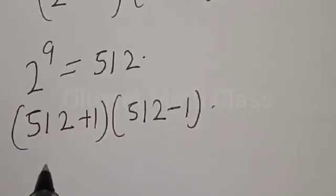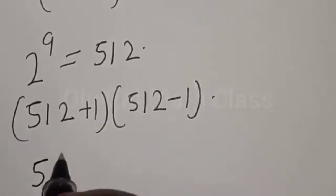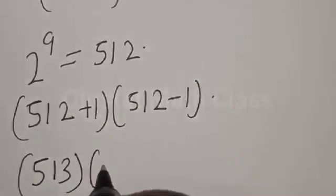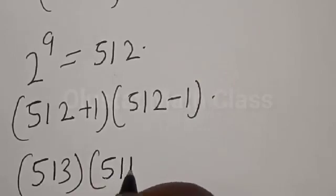Now, 512 plus 1 is what? 513. Then multiply by 512 minus 1. That is 511.